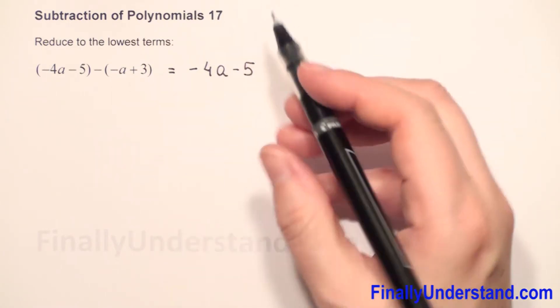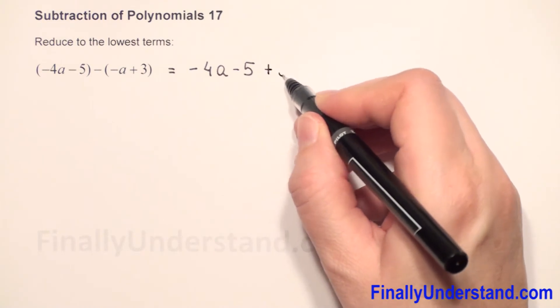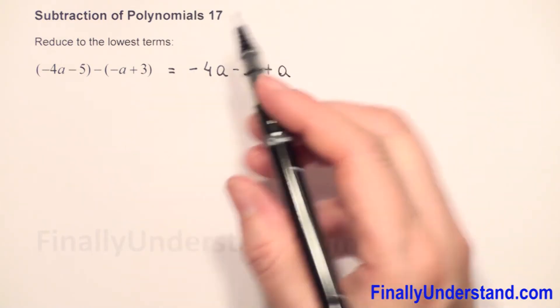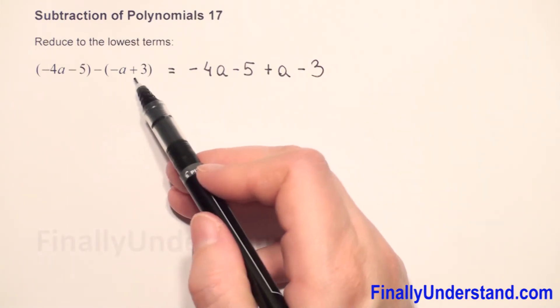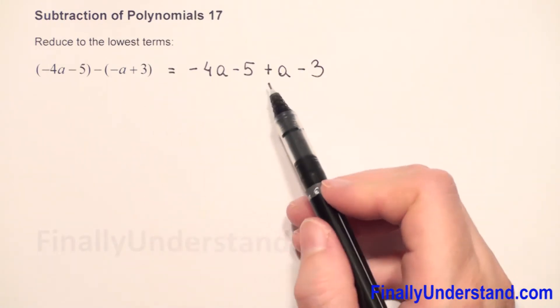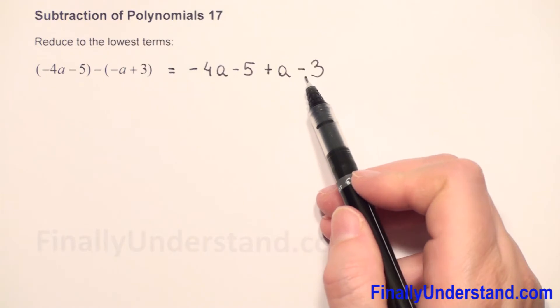So we have negative a, so now it will be positive a. Positive 3, so now it will be negative 3. Every term in parentheses, we change the sign to opposite. Now we have positive a, negative 3.